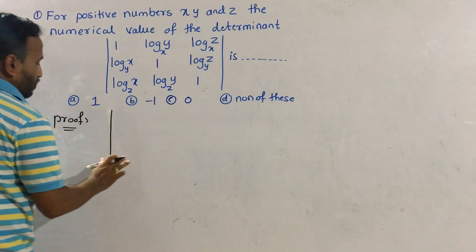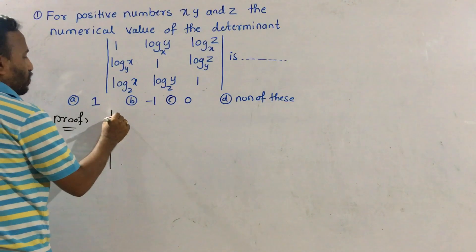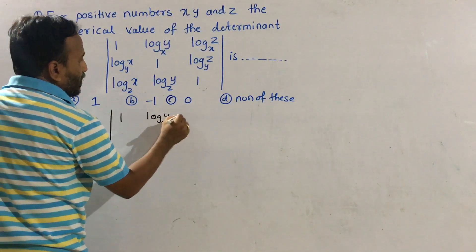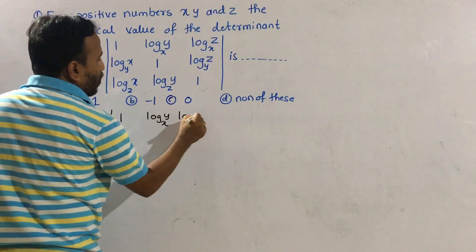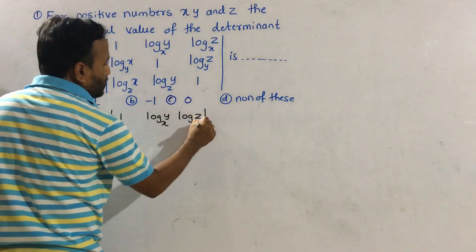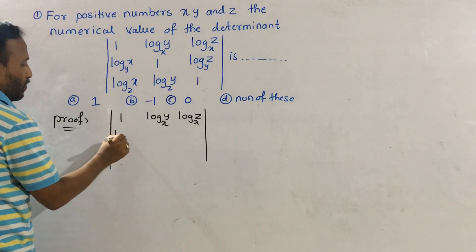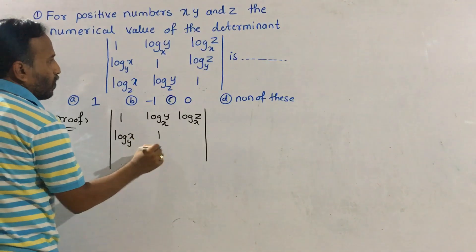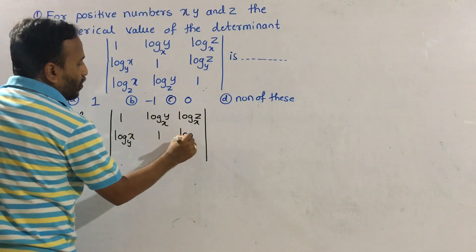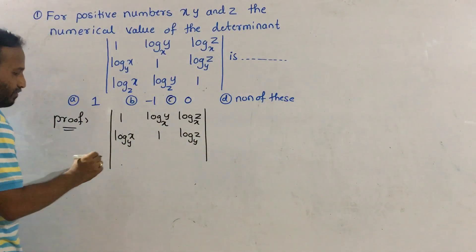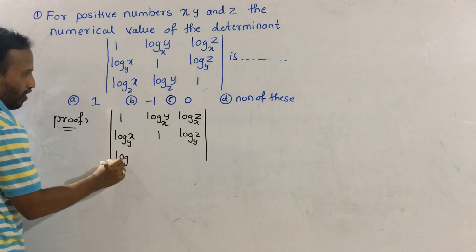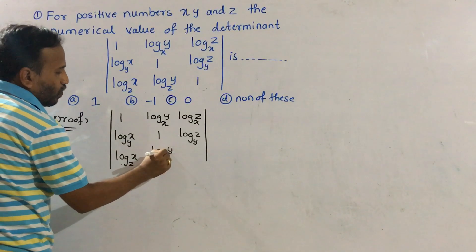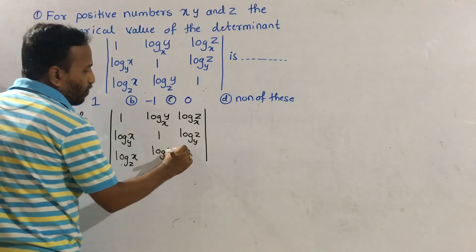So, the determinant is: first row 1, log y to the base x, log z to the base x; second row log x to the base y, 1, log z to the base y; third row log x to the base z, log y to the base z, 1.